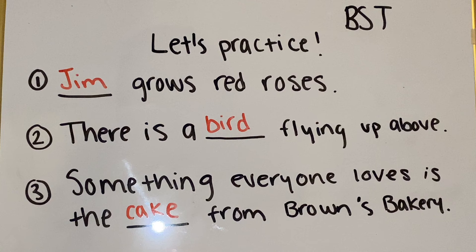Here are the subjects that I chose. For sentence number one, I wrote Jim grows red roses. The word grows indicates an action being performed because it is a verb itself, so I could either choose a name to put there or a pronoun. For sentence two, I wrote there is a bird flying up above. Again, an action is being performed — something is flying up above — so I chose an animal that flies: a bird.